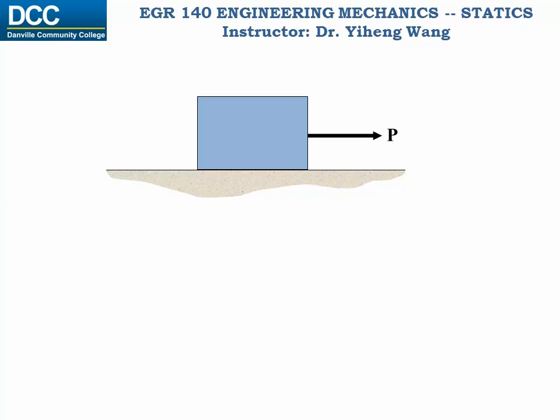Only when the force P exceeds a critical limiting amount will the crate start moving. So what happens before P reaches this limiting amount? According to Newton's second law, an unbalanced force along the horizontal direction would cause motion, therefore there must be another force acting in the opposite direction that balances P, preventing the crate from moving. From experience, we know this force is the frictional force between the crate and the floor.